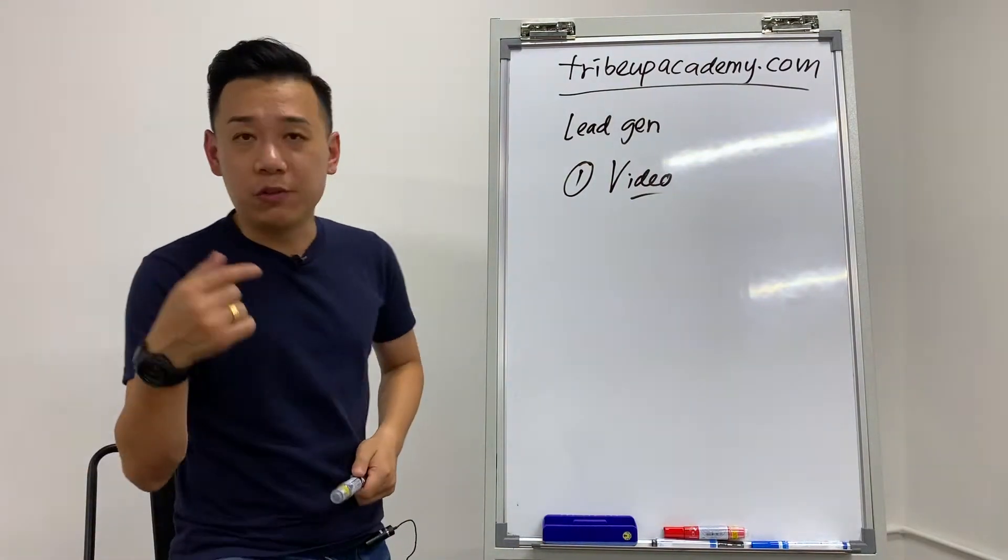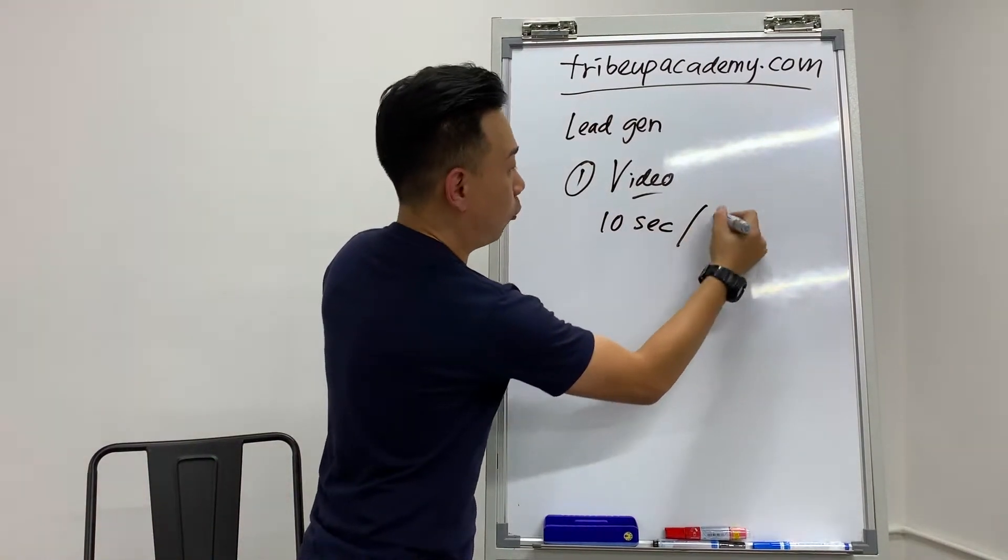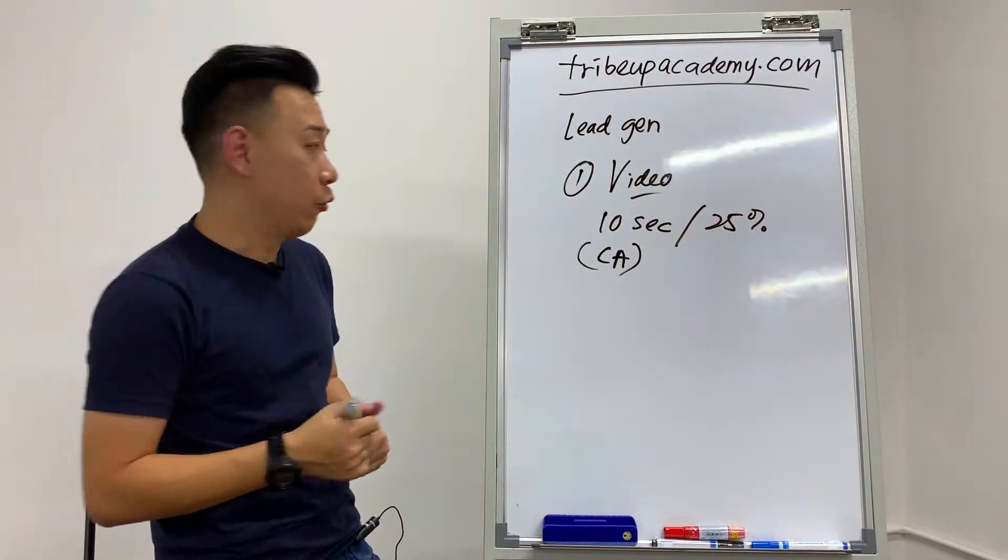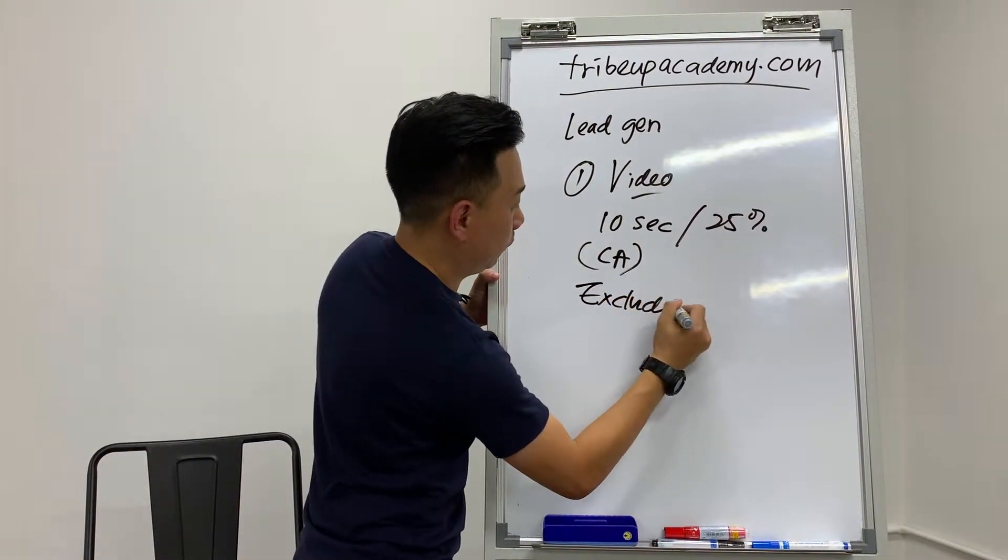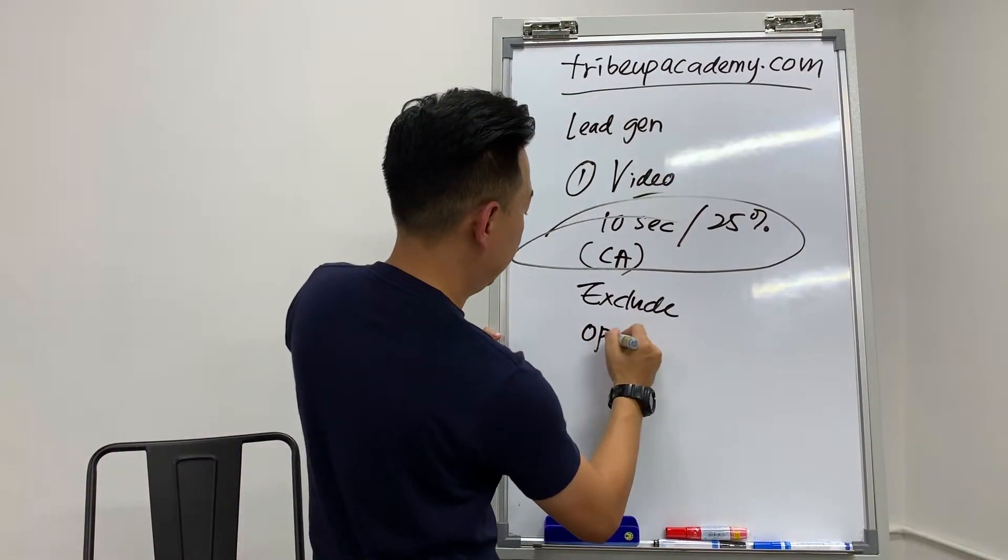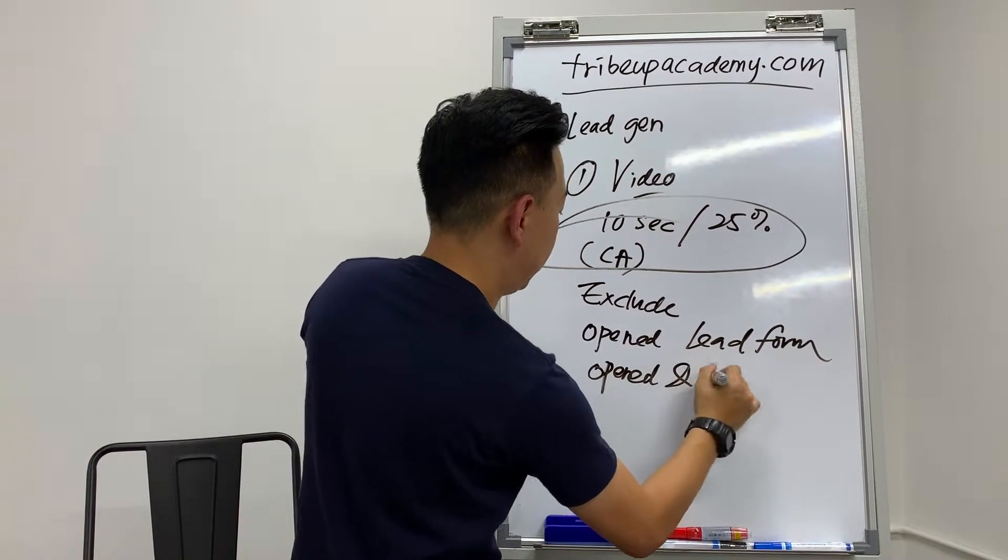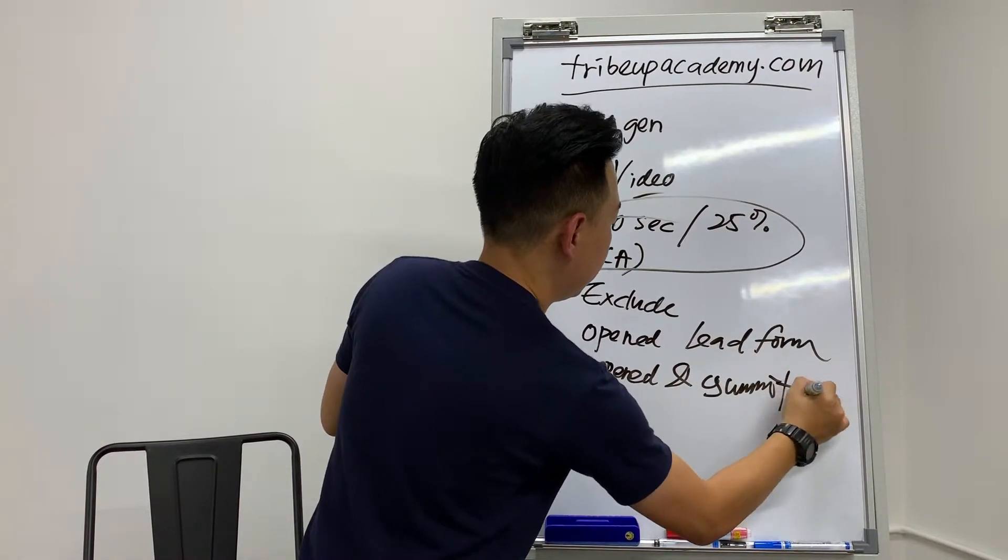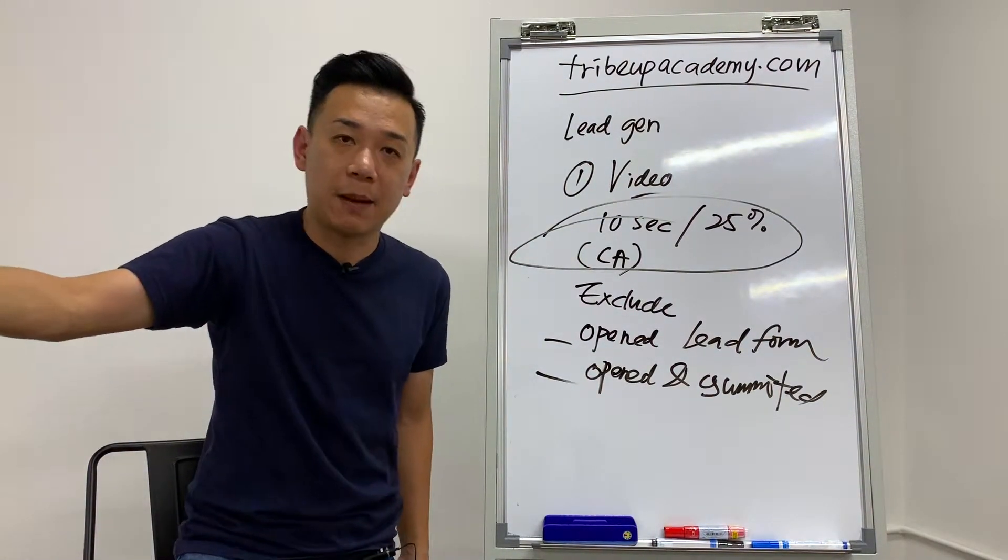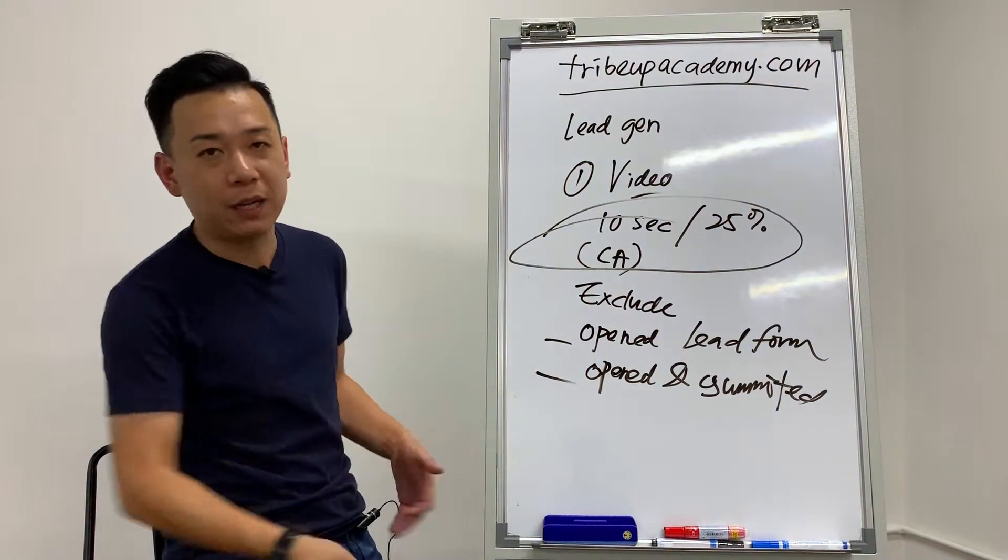What you do is you use video and then you capture people who watch at least 10 seconds or 25% of the video. This is a custom audience that you will be creating. Then after that, what do you do? You exclude this group of people in your campaign. Of course, the other thing that you can exclude is people who open lead form or open and submitted. These two must be excluded—no brainer. They open the lead form but they did not submit, you probably want to move them to the next campaign with another call to action to make sure that they take the action that you're looking for.